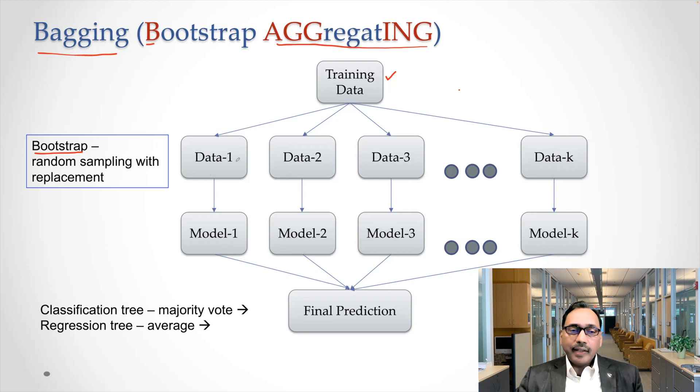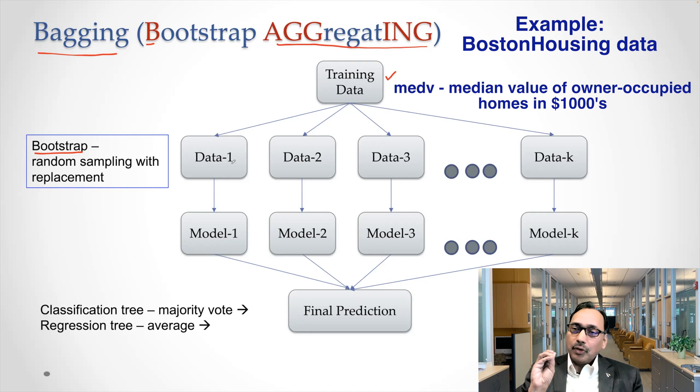So this is random sampling with replacement. What it does is it creates data one. It selects data one from the training data using bootstrap sampling method. So when data one is created from training data, what can happen is because you take one MEDV value or median housing value, put it back, you take the second one, put it back.